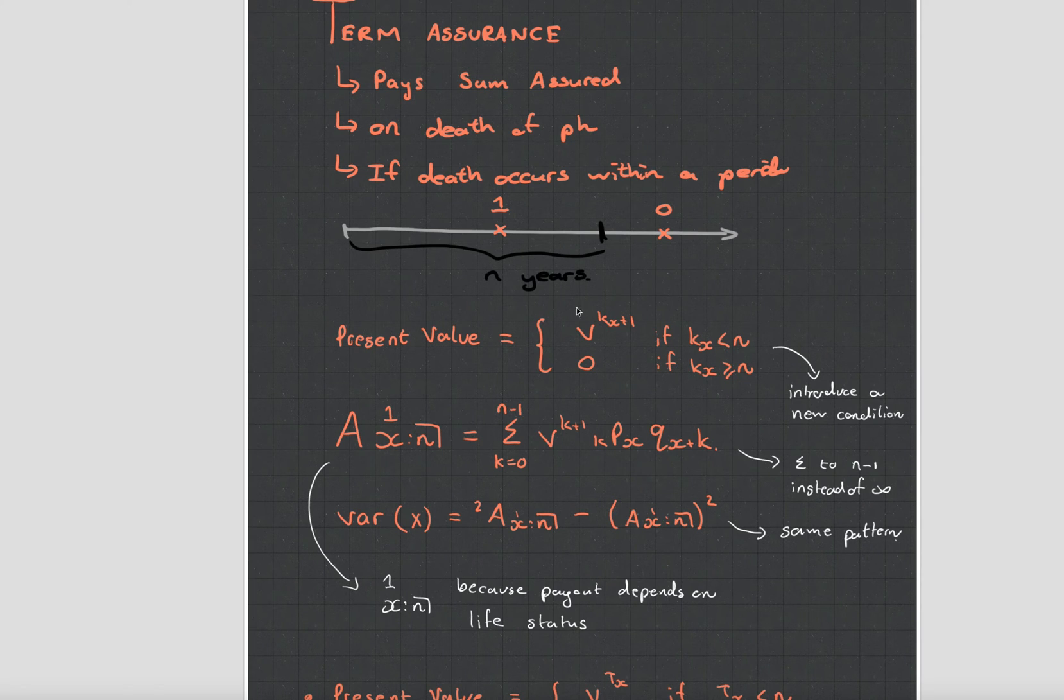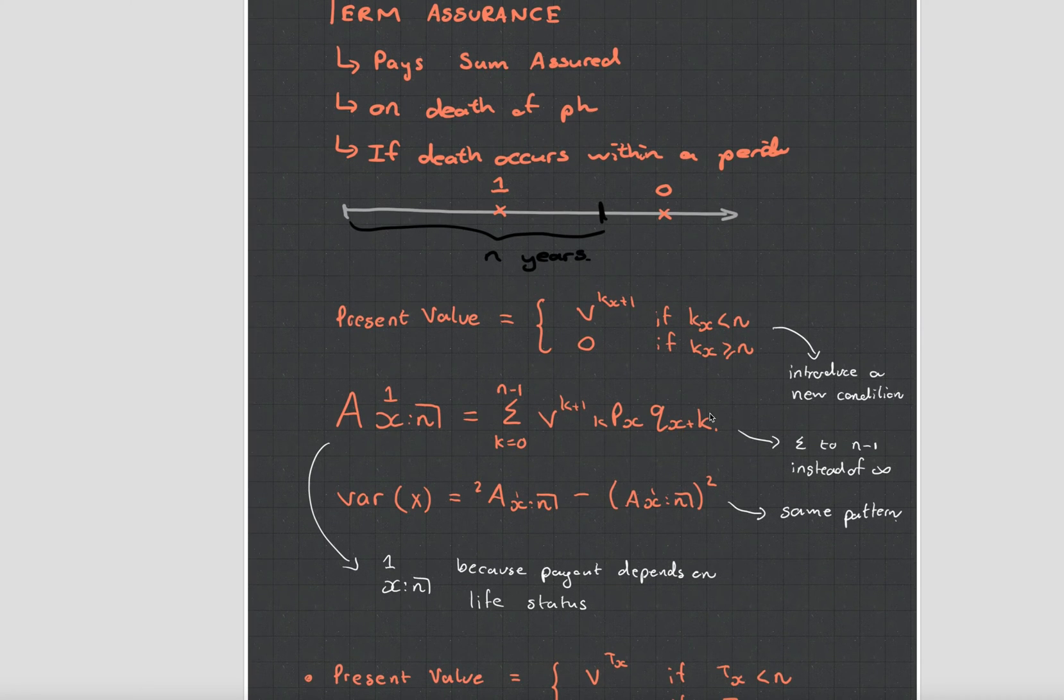Interestingly the mathematics for the present value is the discount value of the age if it's below n years and you get nothing if it's above. So essentially it's exactly the same formula as the whole life assurance except you're summing up to n minus 1 now instead of infinity. And because of that we introduce this new symbol for the expected value and that is AX1 angle n.